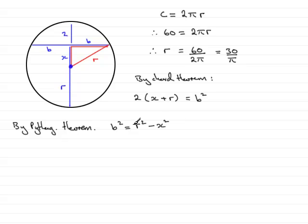So what I'm going to do now is put this into this equation here. I'm going to also number my equations. Let's just put this one here as number 1, this one as number 2, and this one as number 3. So what I'm going to do is substitute number 3 into number 2. And what I therefore have is that 2 lots of x plus r is equal to b squared. But we know that b squared is r squared minus x squared.